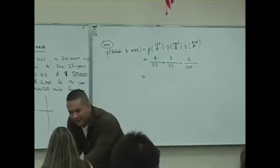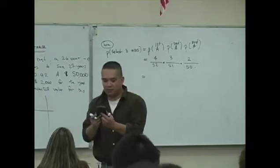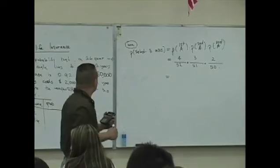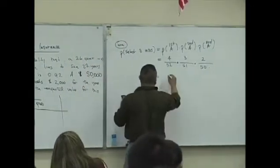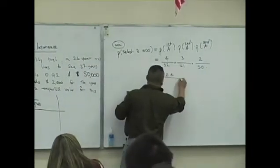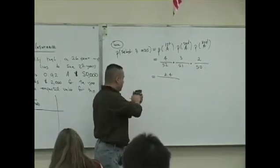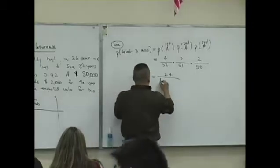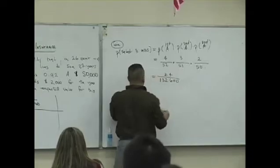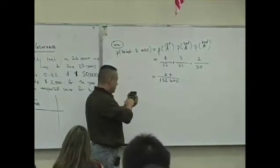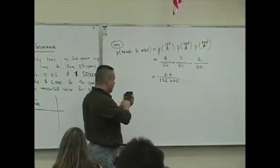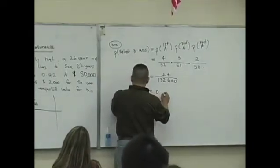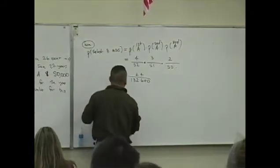Oh, yikes. Everybody know? No? You might have done it right. What'd you guys get? Twenty-four over what? Fifty-two times fifty-one times fifty. I got one hundred and thirty-two thousand six hundred. Twenty-four divided by one hundred and thirty-two thousand six hundred. Yikes. What is that? Zero point. Well, let's keep this for now. Let's keep this value, okay?